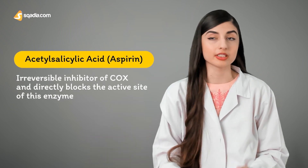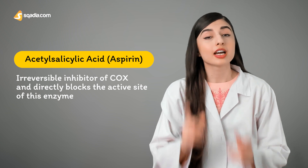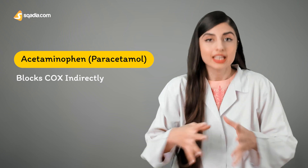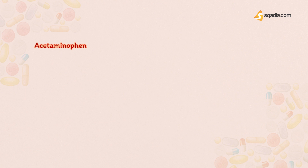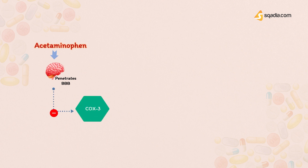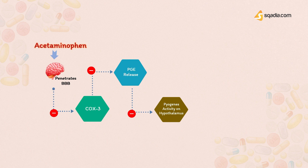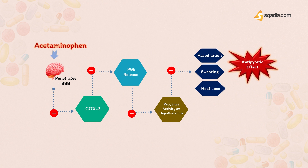Acetaminophen does not inhibit cyclooxygenase in peripheral tissues and therefore has no peripheral anti-inflammatory effects. Although acetylsalicylic acid, or aspirin, is an irreversible inhibitor of COX that directly blocks the active site of the enzyme, studies have shown that acetaminophen blocks COX indirectly. Other studies suggest acetaminophen crosses the blood-brain barrier and selectively blocks a variant type called COX-3, blocking the formation of prostaglandins in the CNS. This inhibits the action of endogenous pyrogens on the hypothalamus, resulting in peripheral vasodilation, sweating, loss of body heat, and ultimately the antipyretic effect.